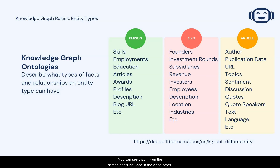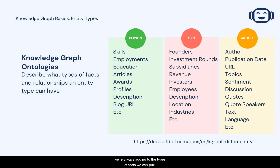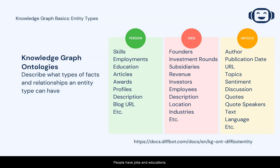You can see that link on the screen, or it's included in the video notes. As fields that matter change over time, we're always adding to the types of facts we can pull. But in many cases, core fact types remain stable. People have jobs and educations, articles have authors and topics, products have SKUs and review data, and so on.